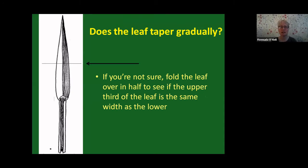Sometimes a key will ask you whether the leaf tapers gradually or is it parallel-sided. Usually you can tell by looking at it — for example, it's very obvious when it's tapering. But if you're not sure, fold the leaf over in half to see if the upper third is the same width as the lower third. That will tell you if the leaf is tapering gradually or if it's parallel for most of the way and then narrowing quite suddenly to the tip.